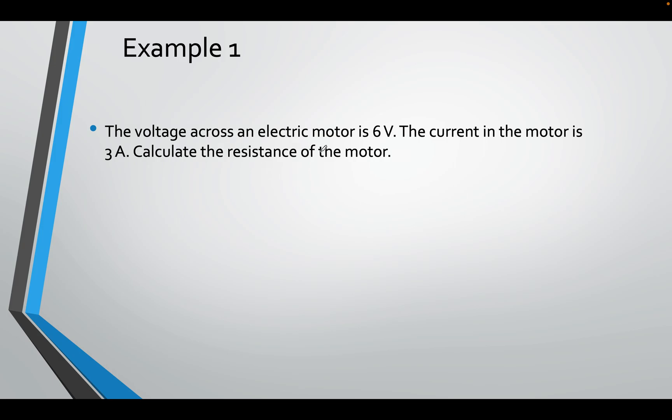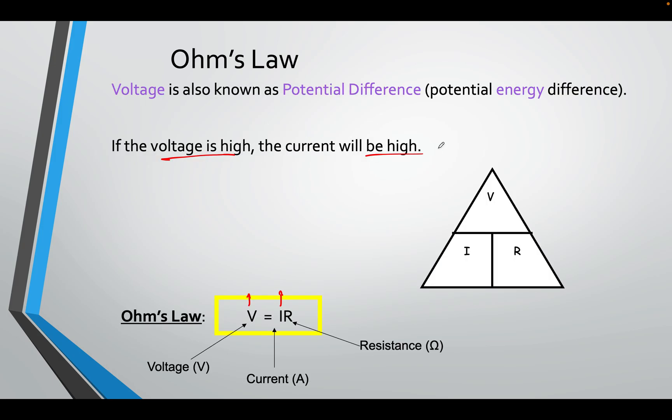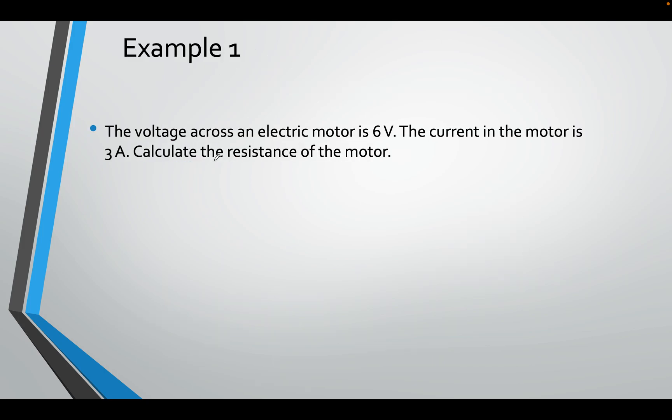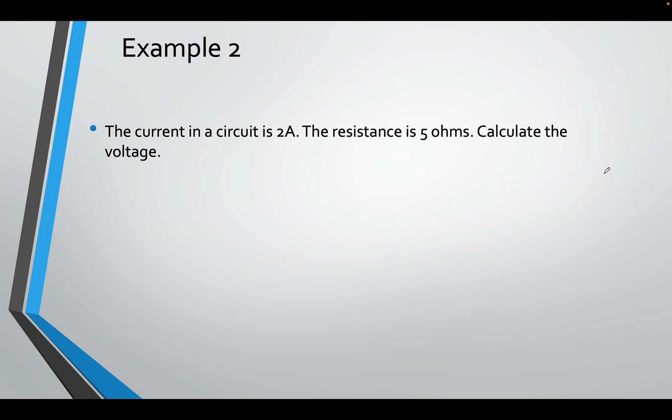An example, calculate the resistance of the motor. If you look at the triangle R, V divided by I. Same idea. So R equals V divided by I. I know that this is my volts, because it says 6V. And this is my amps, because it says 3 amps. 6 over 3 is 2 ohms. Easy.